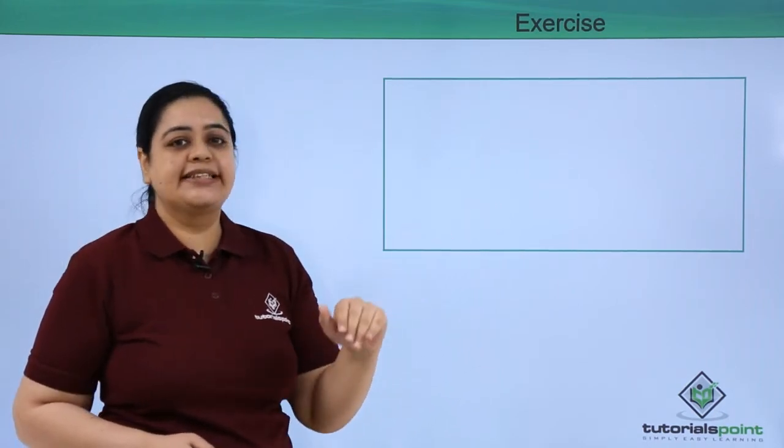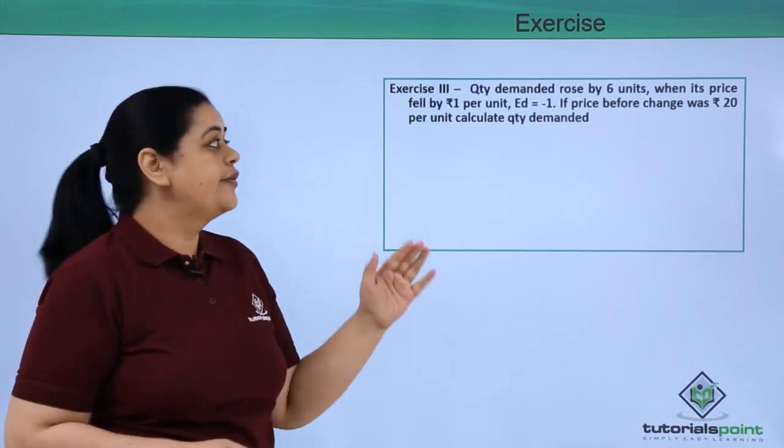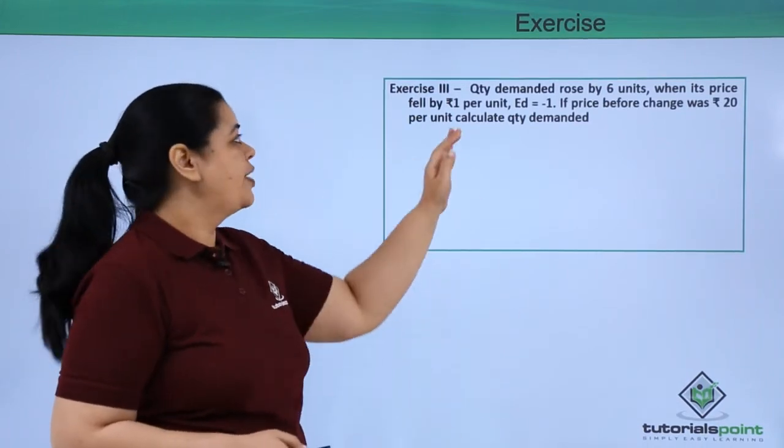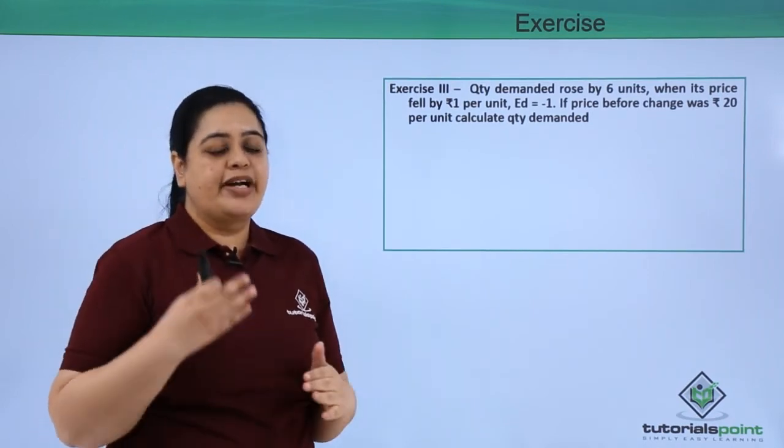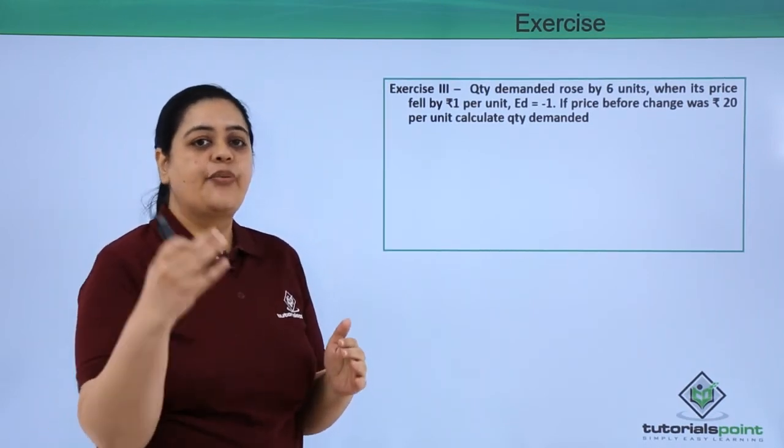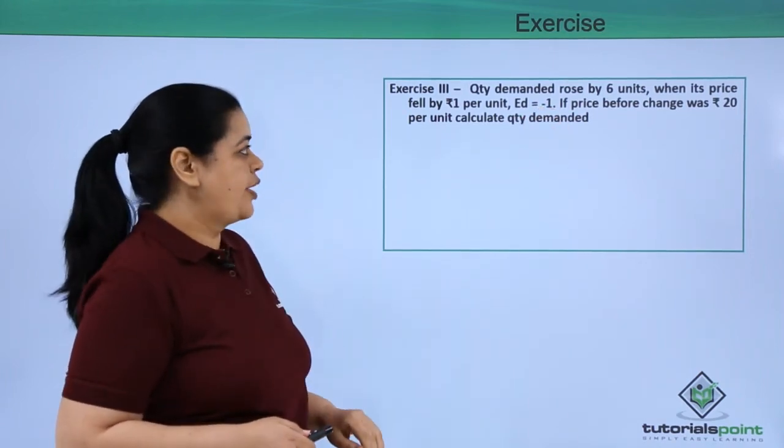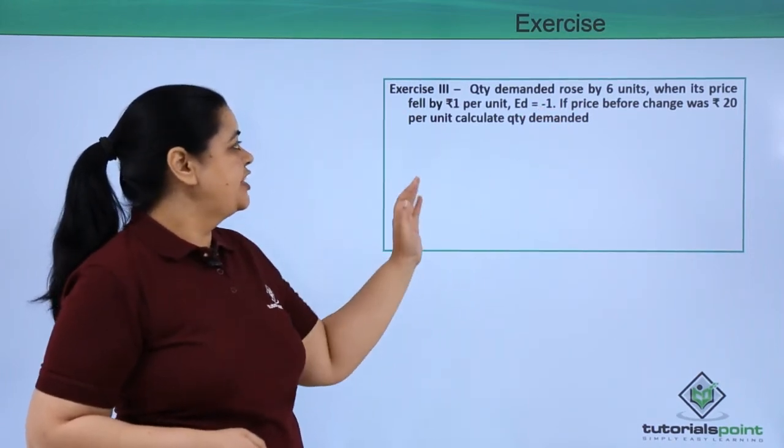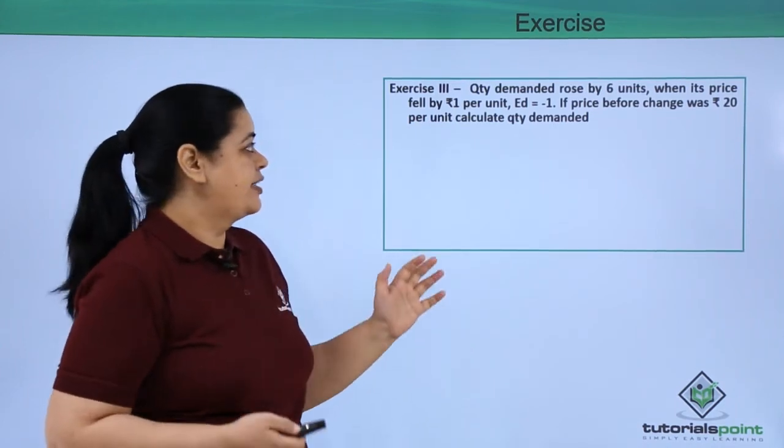Now let's move to the next exercise. Quantity demanded rose by 6 units when the price fell by Rs. 1 per unit. Ed = -1. If the price before change was Rs. 20 per unit, what is the quantity demanded?